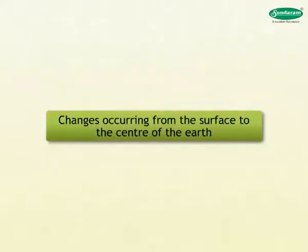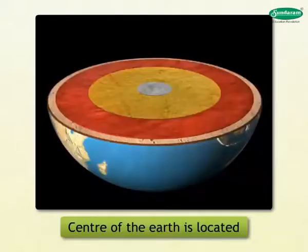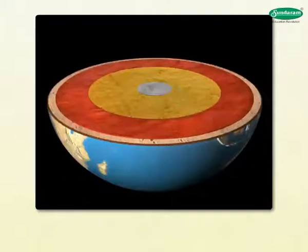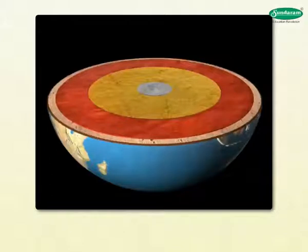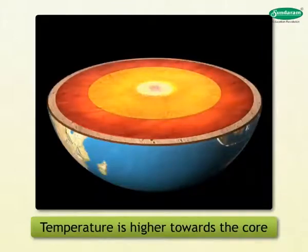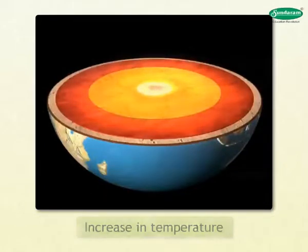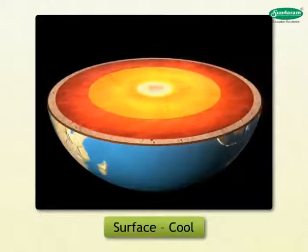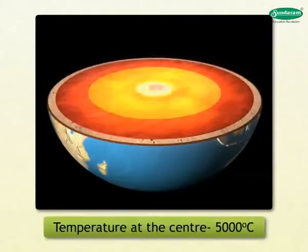Let us see the changes occurring from the surface to the center of the Earth. The center of the Earth is located at a distance of 6,371 kilometers from its surface. Firstly, the process of cooling of the Earth started from the surface, hence the temperature is higher towards the core. This increase in temperature generally takes place at the rate of 1 degree centigrade per 32 meters of depth.